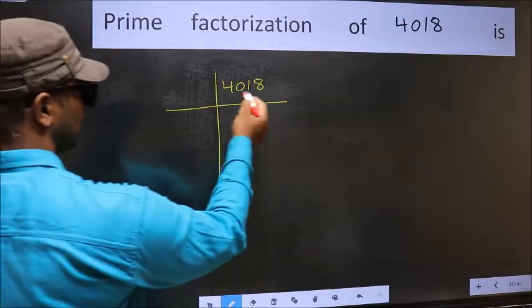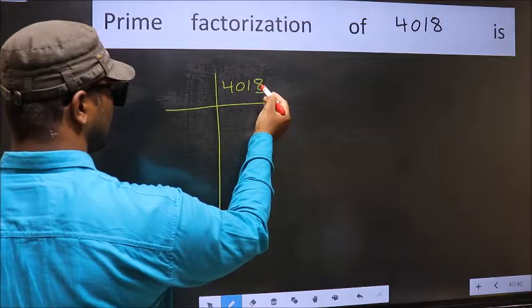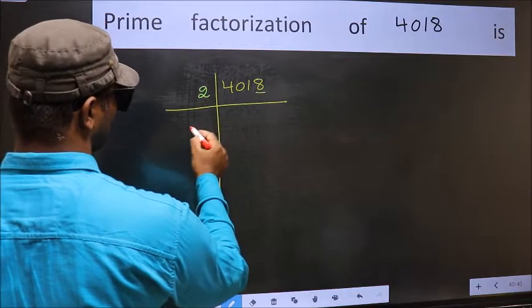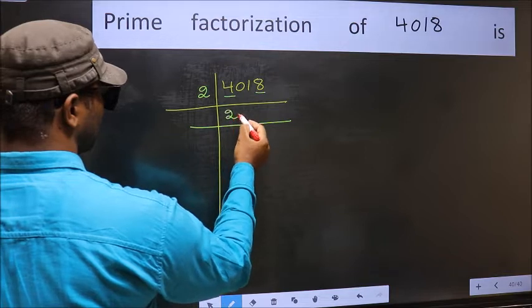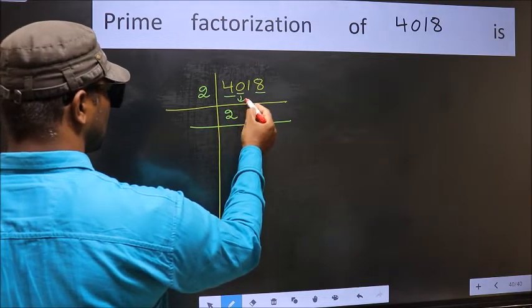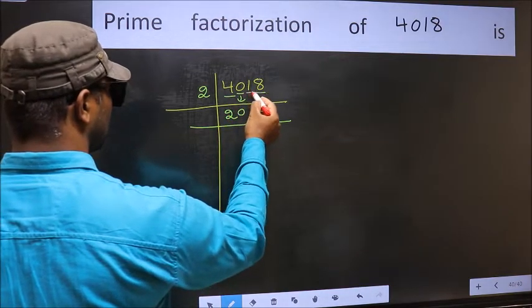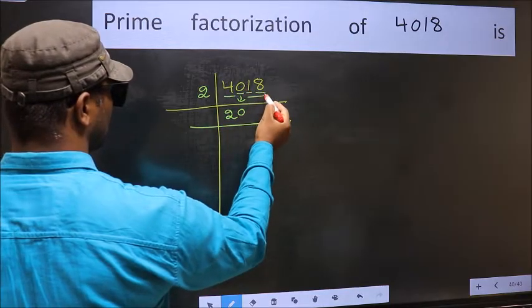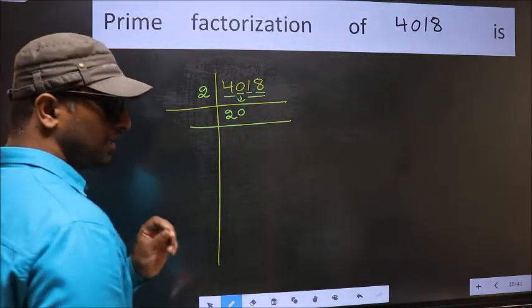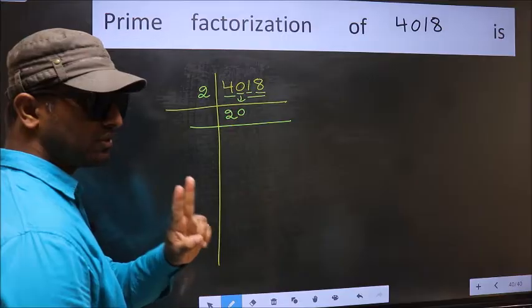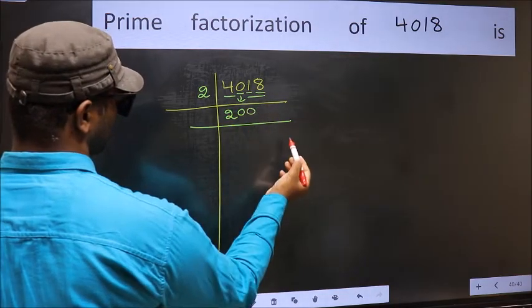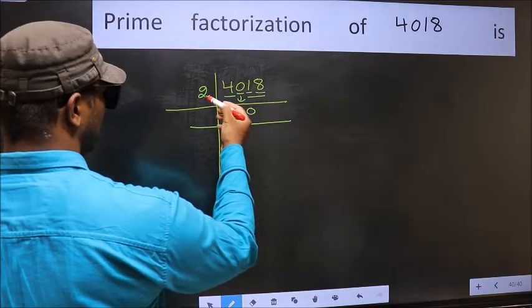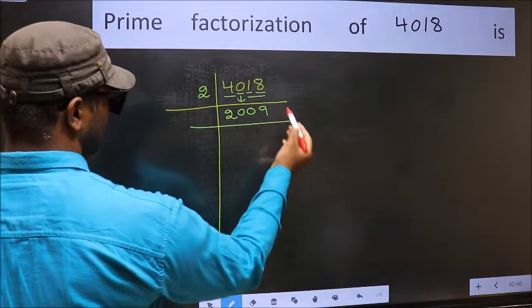Next, in this number, last digit 8 is even, so take 2. First number 4, when do we get 4 in 2 table? 2 times 2 is 4. The other number 0 as it is, down. The other number 1, smaller than 2, so take 2 numbers: 18. Remember, whenever you are taking 2 numbers, compulsory put 0. Now, 18, when do we get 18 in 2 table? 2 times 9 is 18.